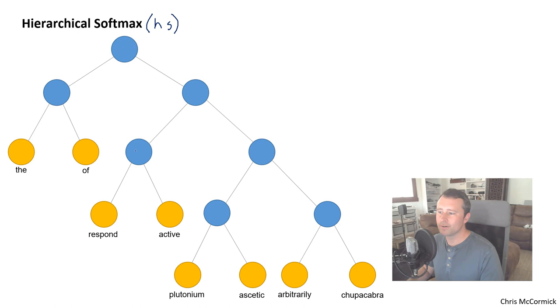So the tree building scheme that we're going to be using for Word2Vec is called a Huffman tree. And the main thing you need to know about a Huffman tree is that it's going to organize the words such that rare words are down at deeper levels, and frequent words are at shallower levels. So the path along the tree to get to an infrequent word is longer. We'll talk about why that's a good strategy in a little while here. But for now, just take it for granted that our vocabulary is organized in this way. So let's say we have this imaginary tiny vocabulary with just eight words in it. The, of, respond, active, plutonium, acidic, arbitrarily, and chupacabra.